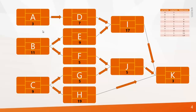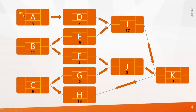Let's assume our project starts on Day 1, so the Early Start of Activity A is Day 1. Since A, B, and C start simultaneously, the same date applies to B and C. For the Early Finish, Activity A starts on Day 1 and takes 3 days, so it finishes on Day 3. The equation is: Early Start + Duration − 1 = Early Finish. The same equation applies to B and C.